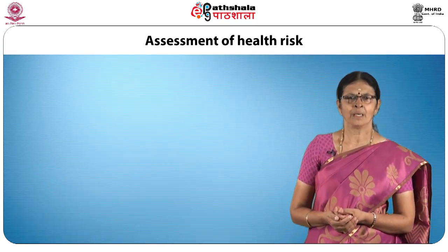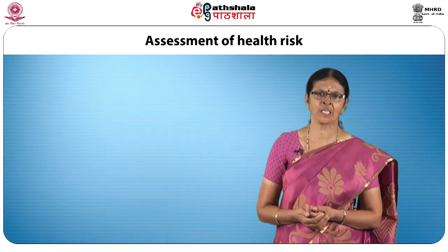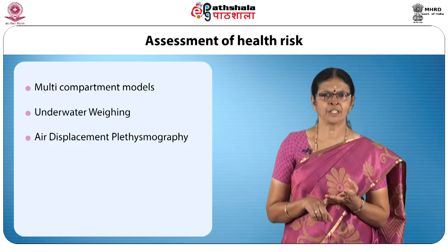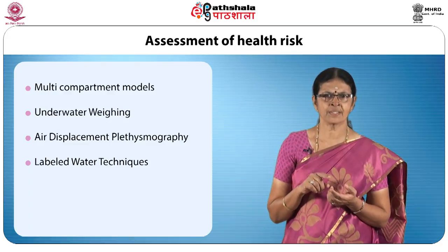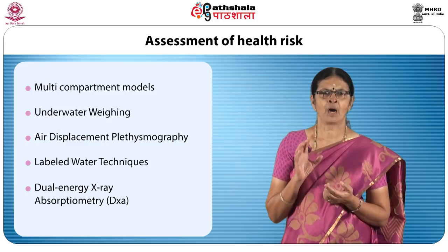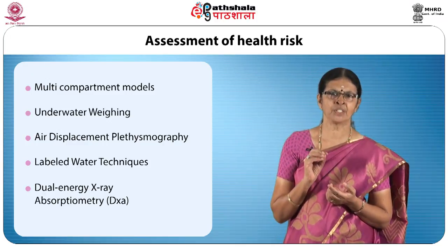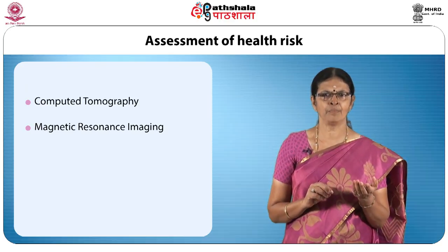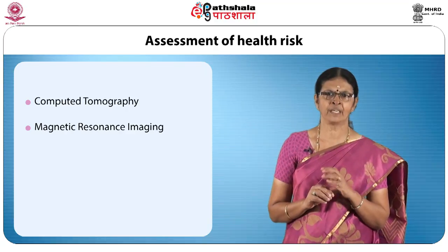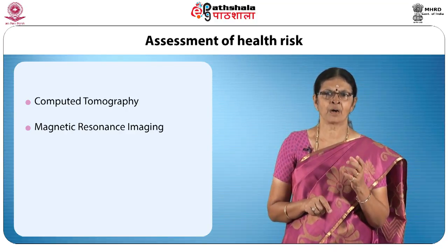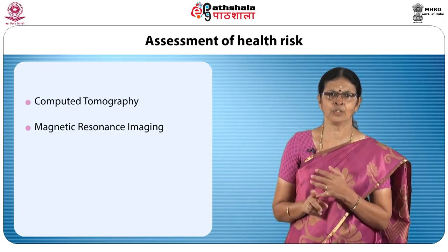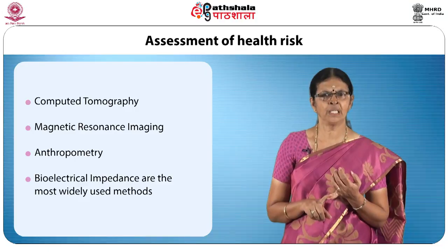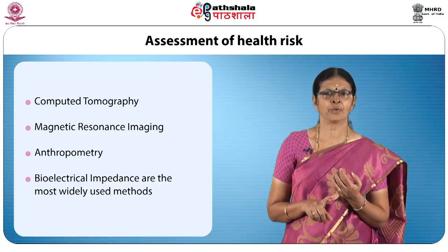How will you assess health risk? Many reference methods are able to estimate body composition accurately at the individual level. Multi-compartment models, underwater weighing, air displacement plethysmography, labelled water techniques and dual energy X-ray absorptometry are the most reliable methods to obtain accurate measures of total body fat. Computed tomography and magnetic resonance imaging have been shown to provide information about body fat distribution. Nowadays, reference methods are still not suitable enough for field and clinical use. Therefore, anthropometry and bio-electrical impedance are the most widely used methods when population size is big, as per Dr. Heta 2004.